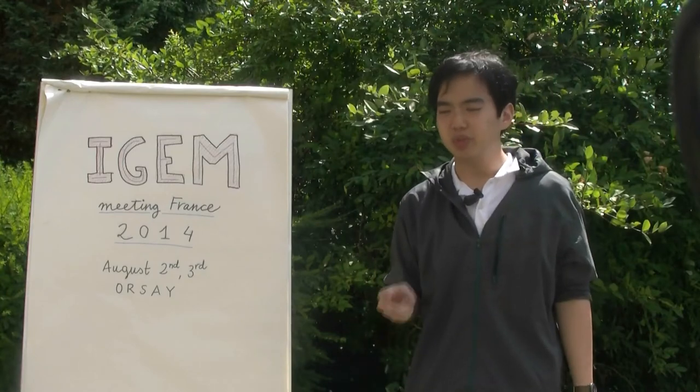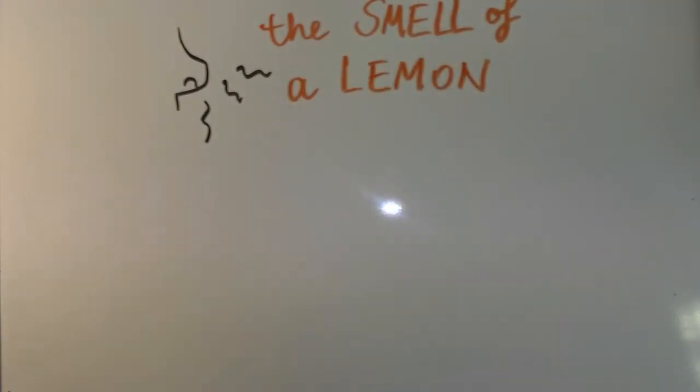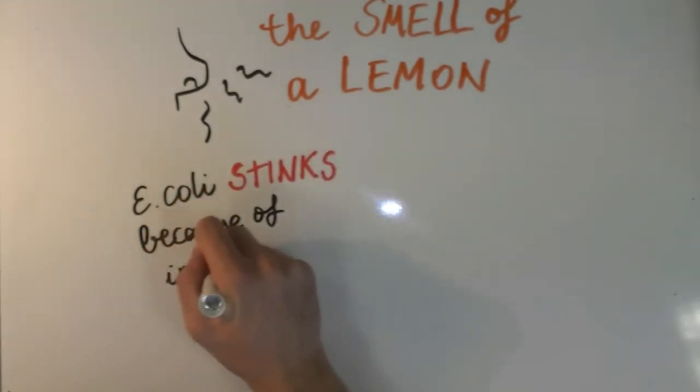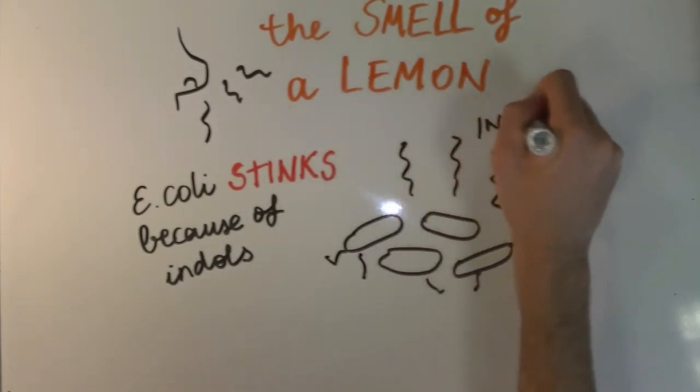Second is smell because we will be using E. coli and E. coli as you may know smells really bad. This is because there is a production of certain molecules called indoles. What we want to do is basically take away all production of indole. That way it won't smell bad.